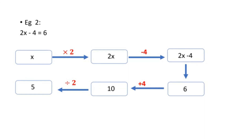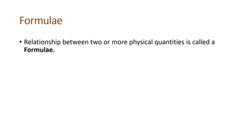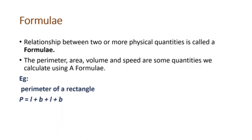The next part of this lesson is about formulae. A formula is a relationship between two or more physical quantities, and using a formula we can find out various physical quantities such as perimeter, area, volume, and speed. For example, the perimeter of a rectangle is length plus breadth plus length plus breadth, which can be simplified to: Perimeter equals 2 times (length plus breadth). This kind of relationship is called a formula.